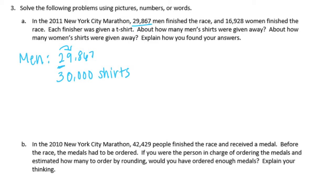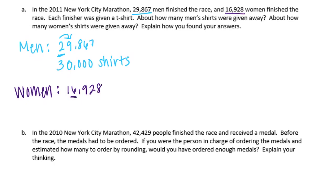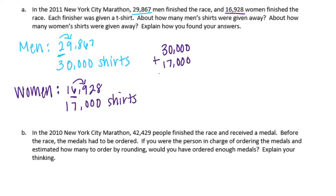For the women: there were 16,928. I'm going to round to the thousands place here — you could round to the ten thousands place again since it doesn't specify. The thousands place is the six; next to it is a nine — five or higher — so the six turns into a seven, and everything else stays the same, giving 17,000. Adding 30,000 plus 17,000, I get 47,000 shirts as my estimate.